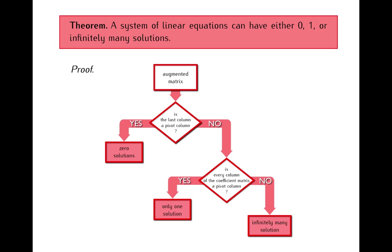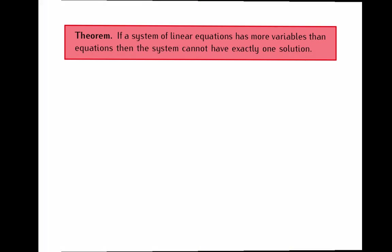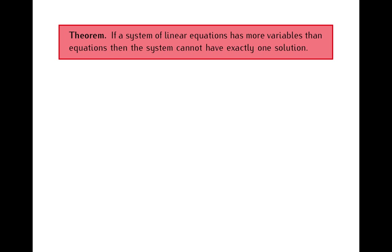For now, let me finish with one more fact that says that sometimes it is very easy to see if a system of equations can have only one solution or not. Namely, we have this theorem: if a system of equations contains more variables than equations, then such a system cannot have exactly one solution.